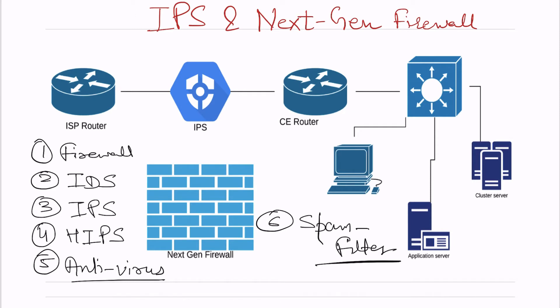Antivirus is software we install on servers, applications, or workstations. Hackers try to create files with malicious code, fake signatures, and fake hashing algorithms. The purpose of those files is to enter your operating system, delete kernel files, capture your important passwords and information, and probably encrypt them so you pay ransom. Antivirus software is very important and must be updated regularly.